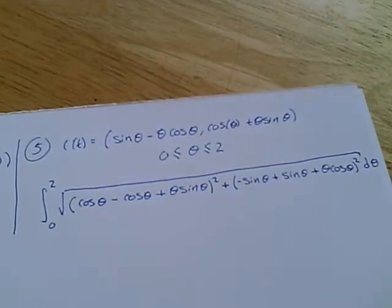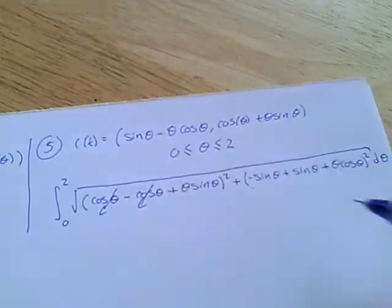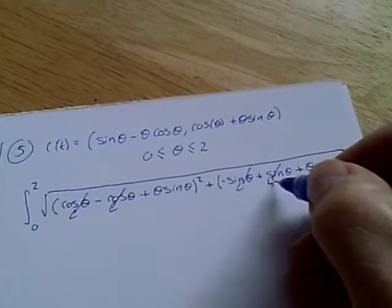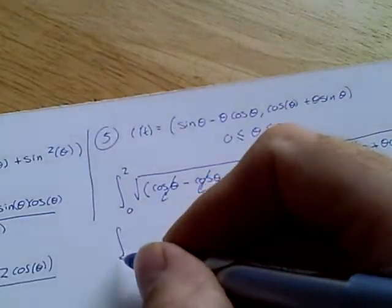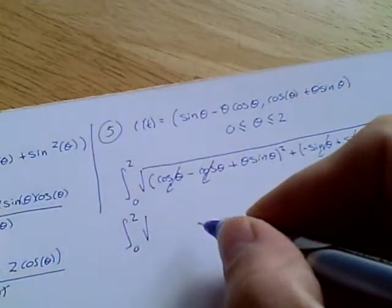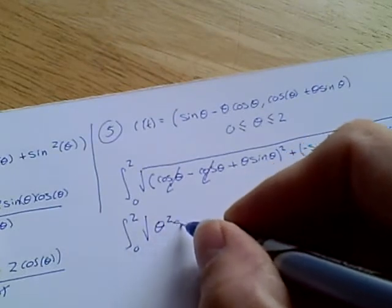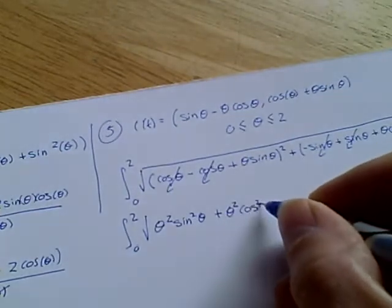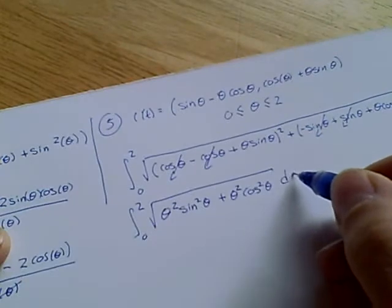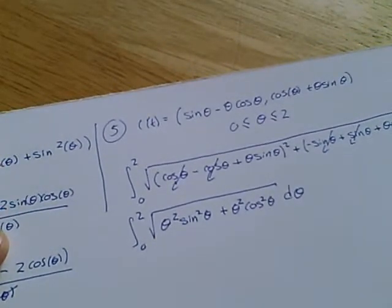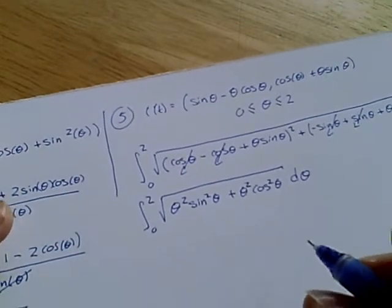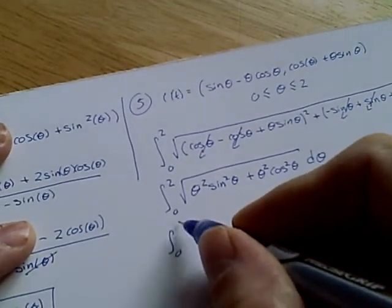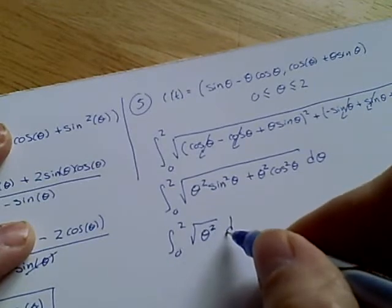It's quite an impressive looking integral, isn't it? However, when there's trig involved, there's usually substantial simplification. And there is here, too. These cosines nicely cancel. These sines nicely cancel. And we're left with 0 to 2, square root of θ squared, sine squared θ, plus θ squared, cosine squared θ. Now, you should know by now that something like this is very convenient. Because what we end up with is just the square root of θ squared, d θ.